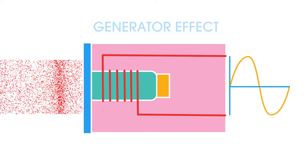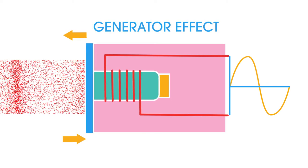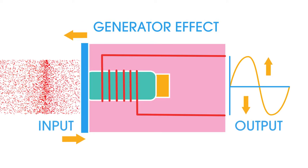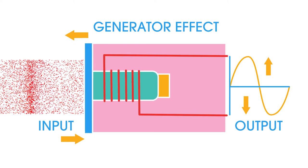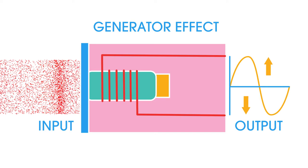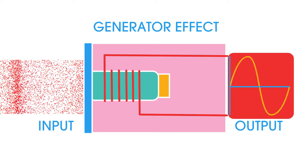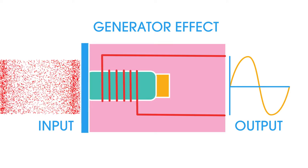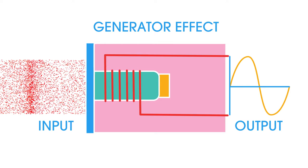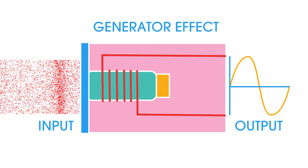This can also be called the generator effect. As the direction of the motion changes, then so does the direction of the current, so the output is AC. The output frequency matches that of the incoming sound signal. This signal is usually very weak and needs amplifying before being passed on to a loudspeaker.